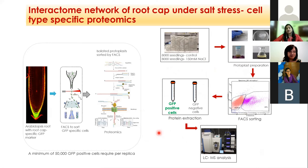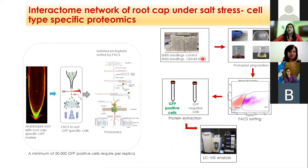The challenge here was to obtain a minimum of 50,000 GFP-positive cells per replicate in order to get a sufficient amount of protein from each cell type. To achieve this, we had to start with a very large number of seedlings — approximately 16,000 seedlings per biological replicate. But we could successfully do that.